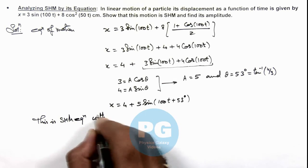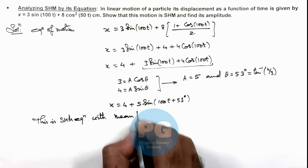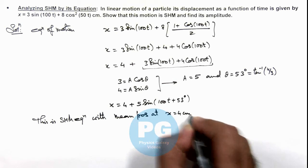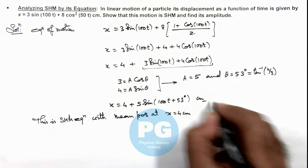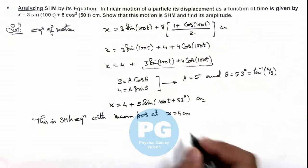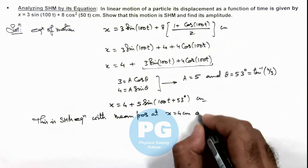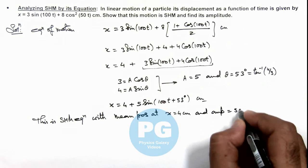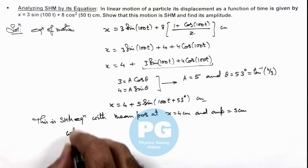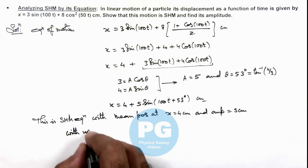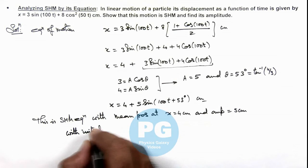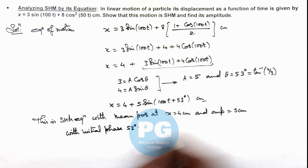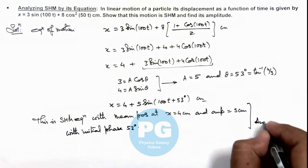The motion is SHM over the mean position at x equal to 4 centimeter, because all values are given in centimeters from the beginning. Its amplitude is equal to 5 centimeters, with an initial phase of 53 degrees. This will be the final result of this problem.